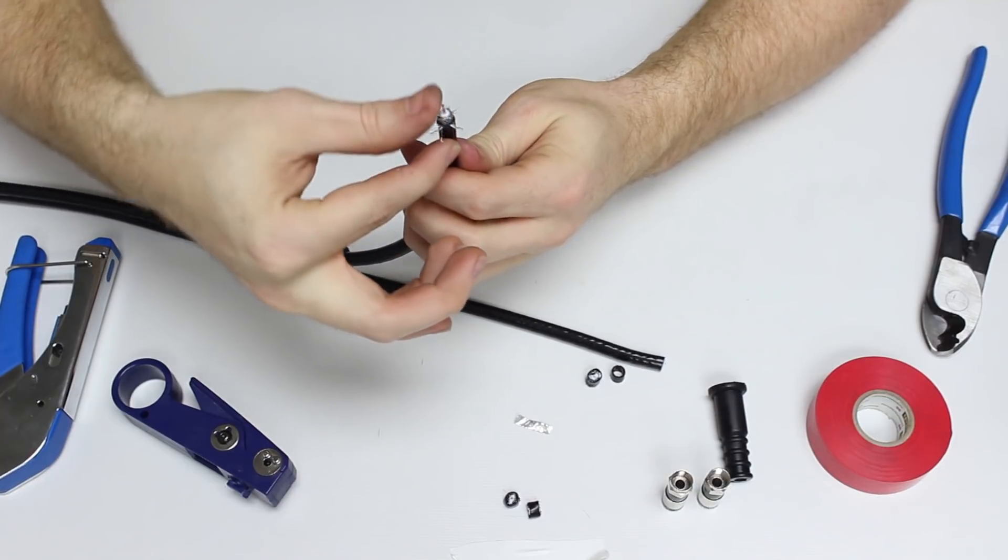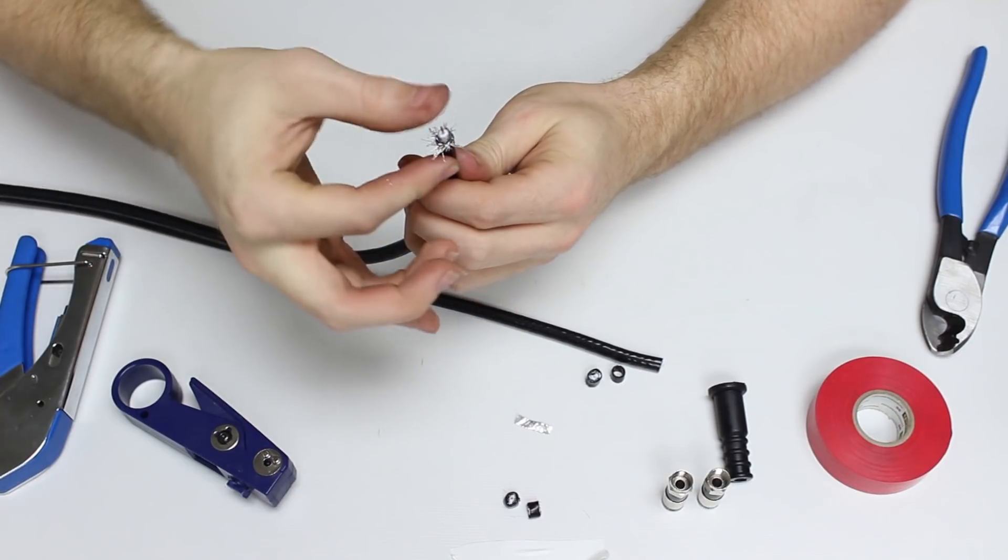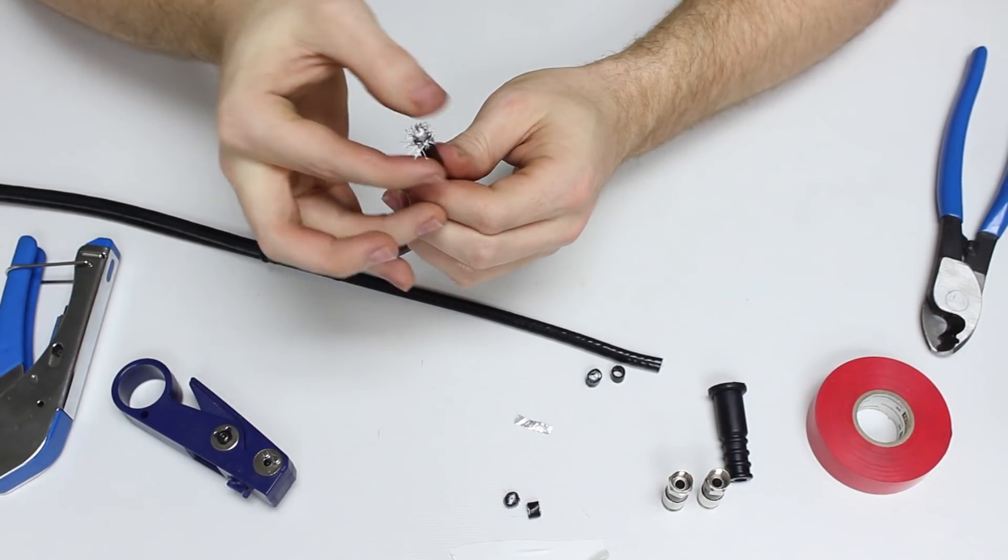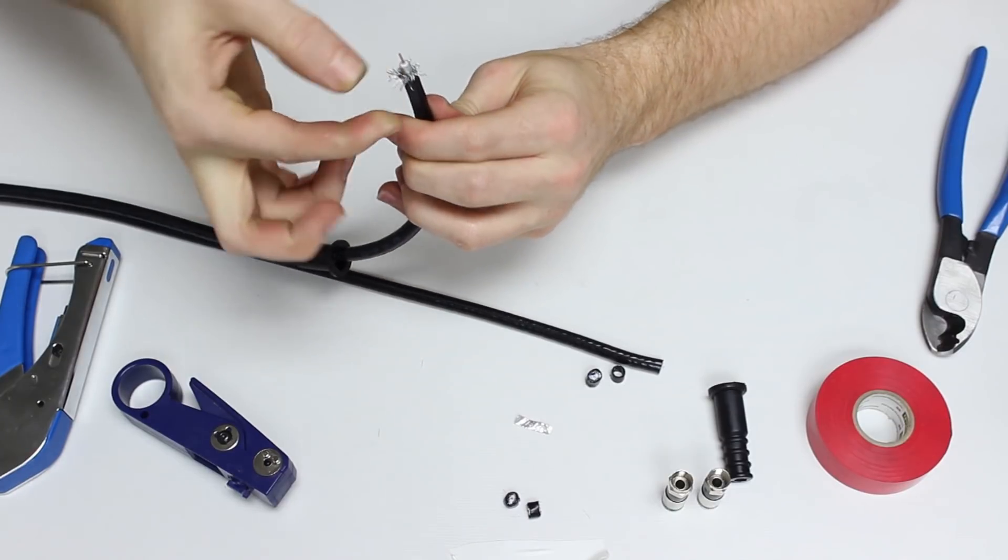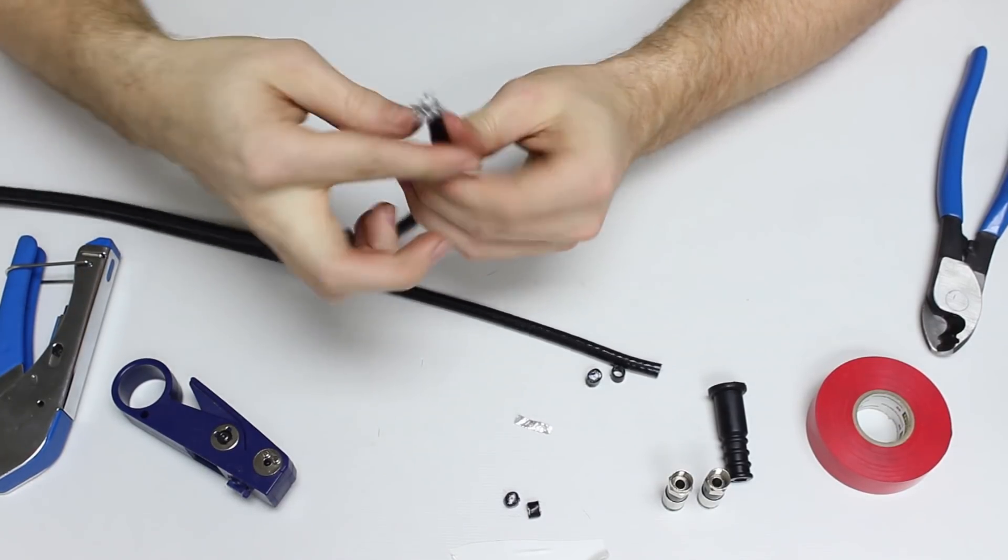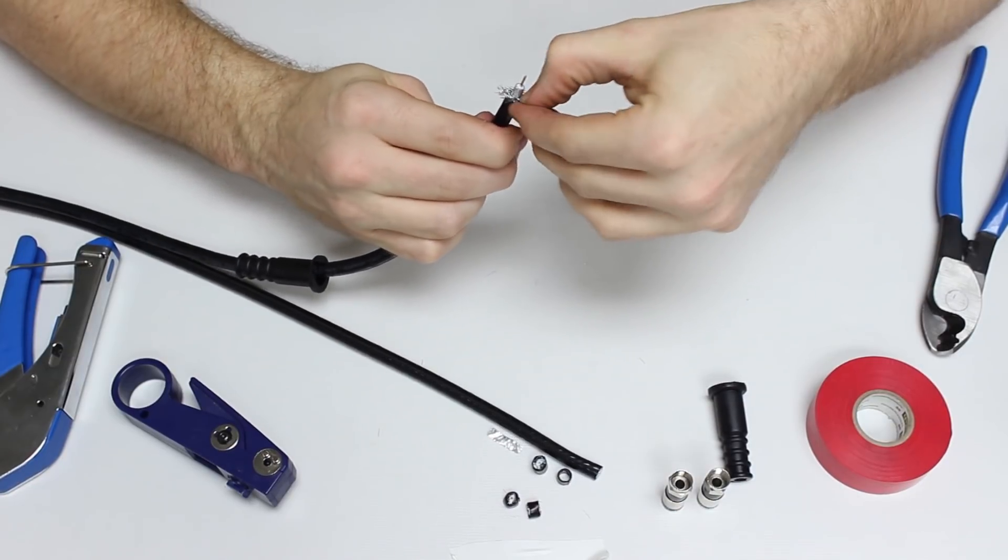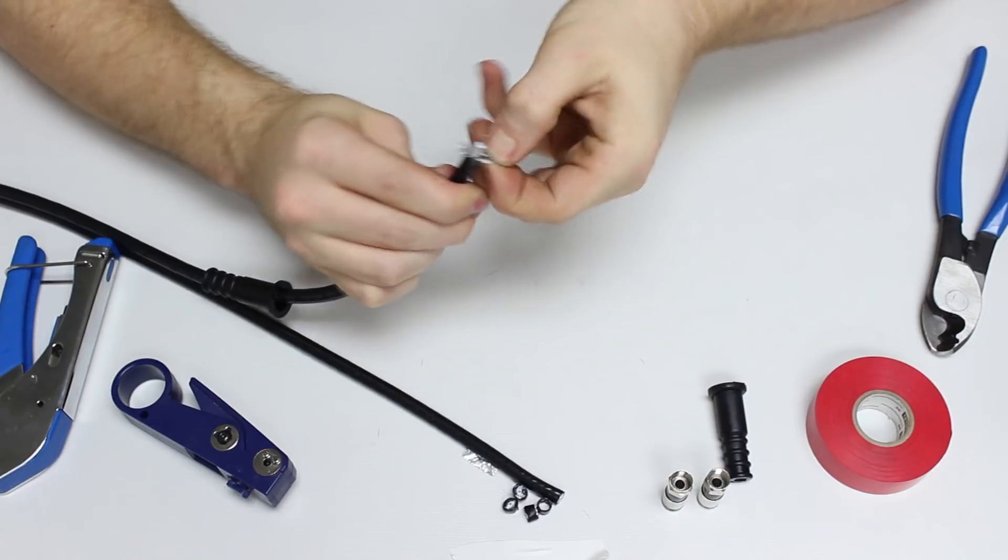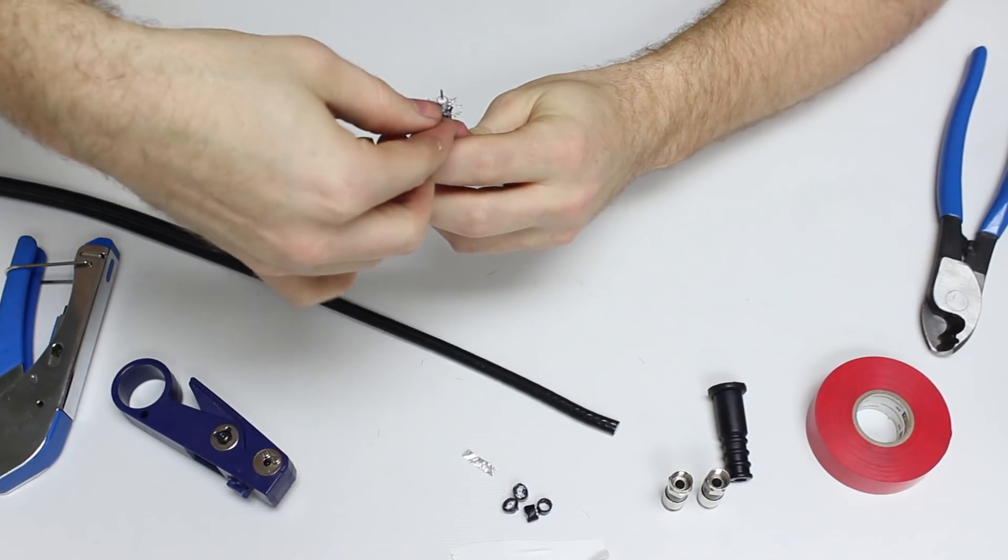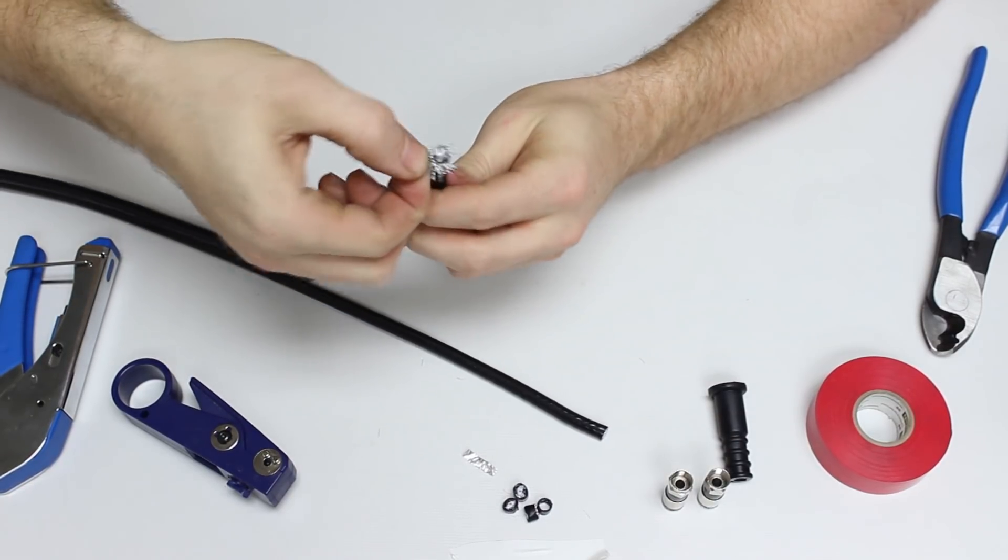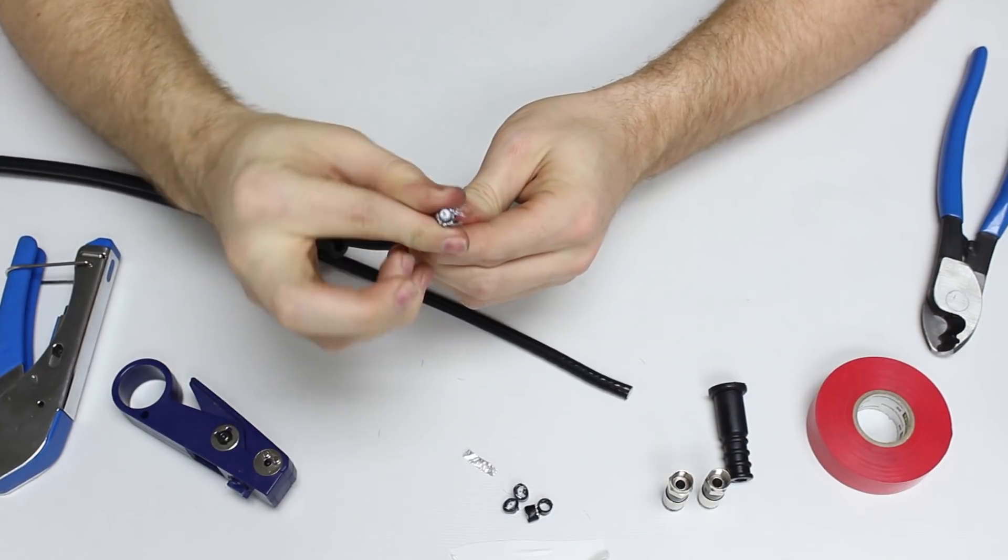You're then going to take your thumb and just fold back that second layer of wire mesh. You do not want to cut this off. This is what is used for the structural support for the actual connector. And this is what gives the cable its rigidity. So once you have all of the braids pushed back then you're just going to lay them down.